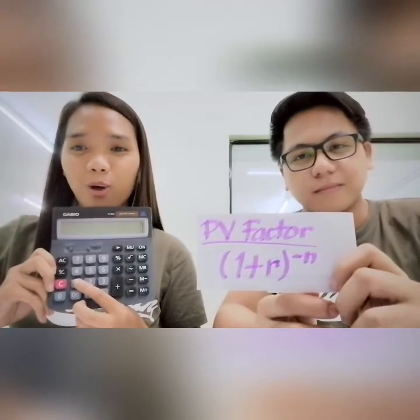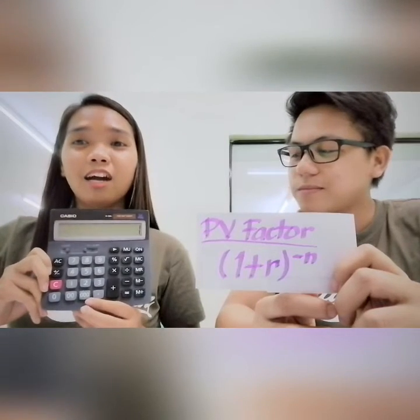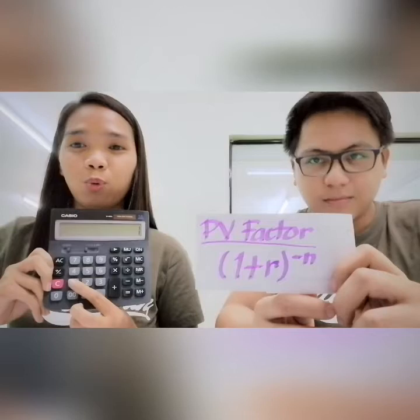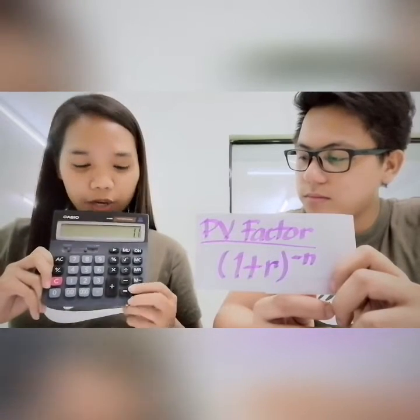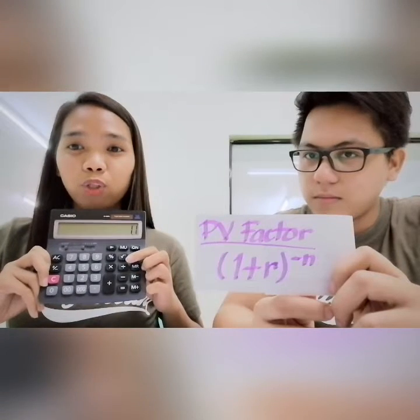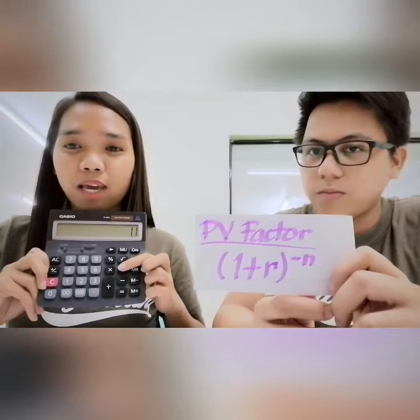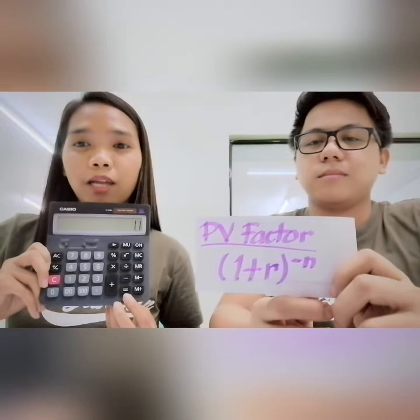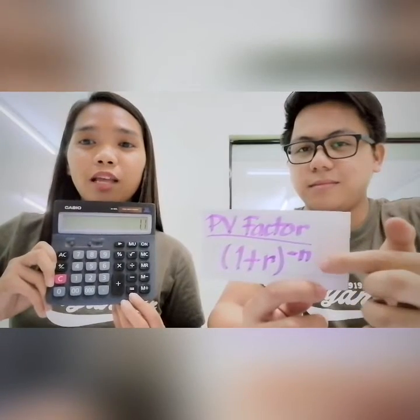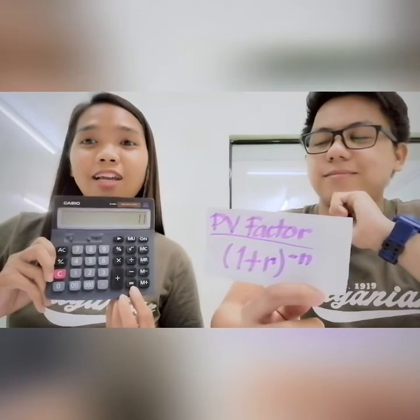We are going to start by pressing 1, which is a constant number, then point and the interest rate, so that's 1.1 for 10%. Since we are computing for the present value, we use the divide sign and press it twice. Then we press the equal sign — the number of times depends on the number of periods. Since we are computing for 10% for 10 years, we press the equal sign 10 times.